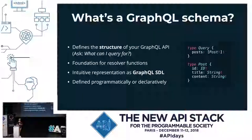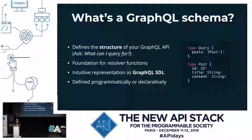For those not yet familiar with a GraphQL schema: the GraphQL schema essentially defines the structure of your GraphQL API — what could you query for, what kinds of queries can you send. GraphQL out of the box provides a nice syntax for that called GraphQL SDL, short for Schema Definition Language. You see an example here where you have a query type for posts and a Post type with fields like ID, title, and content. In practice you can define your schema in two ways: declaratively using GraphQL SDL, or programmatically.